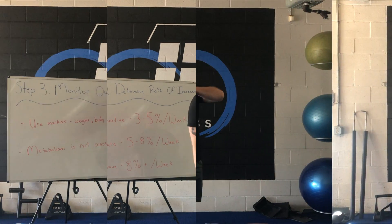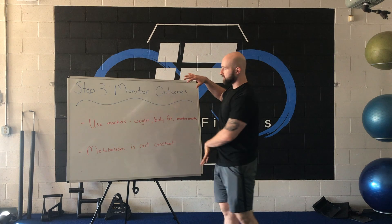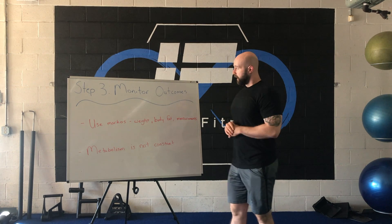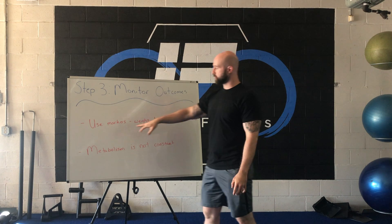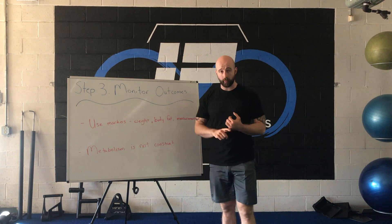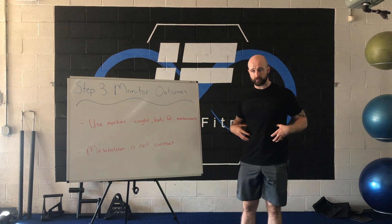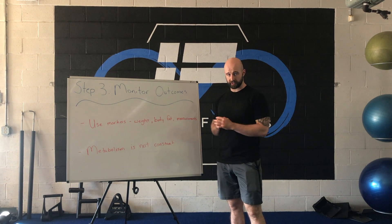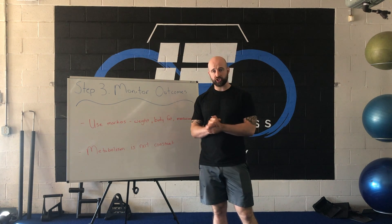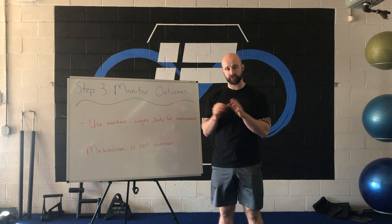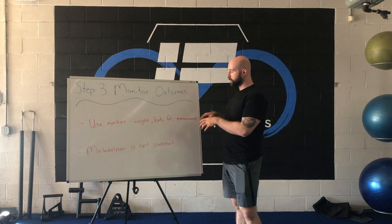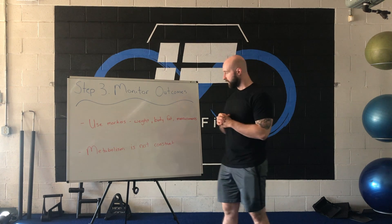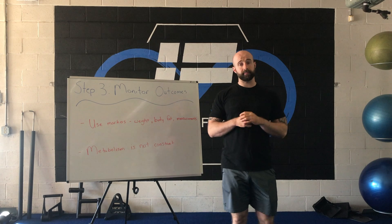Step three is monitoring the process — monitoring the outcomes of the reverse diet. The first step in monitoring outcomes is to use markers of progress: things like scale weight, body fat percentage, and body circumference measurements. All of these things can be used to determine how you're doing with your reverse diet. I will usually use a combination of the three, but you do not have to use all of them.